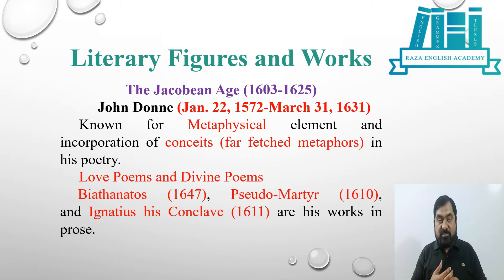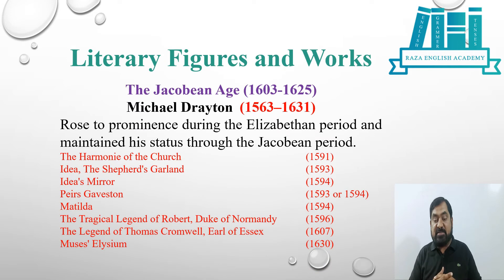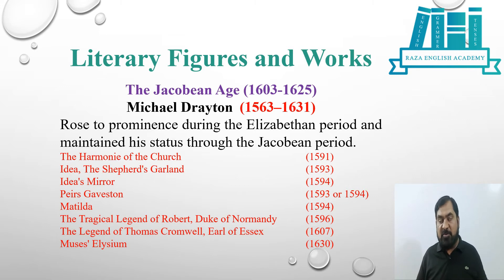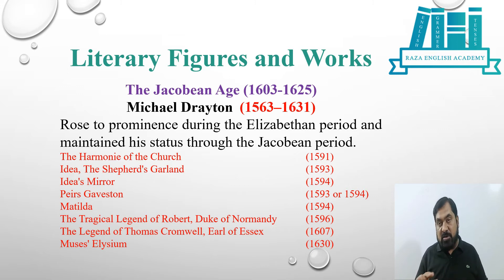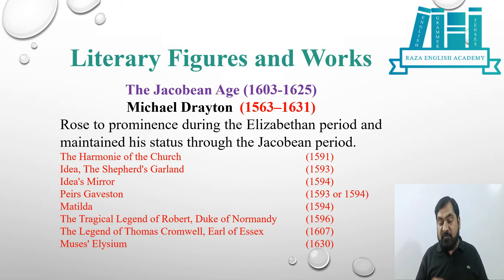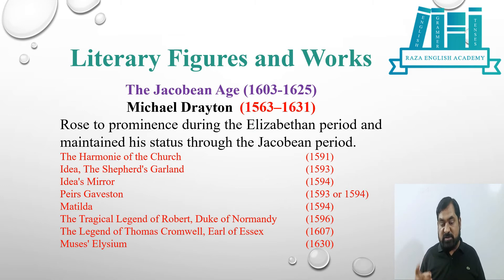Michael Drayton rose to prominence during the Elizabethan period and maintained his status through the Jacobean period. He was born in 1563 and died in 1631. His important works include: The Harmony of the Church (1591), Idea: The Shepherd's Garland (1593), Idea's Mirror (1594), Piers Gaveston (1593), Aure (1594), Mathilda (1594), The Tragical Legend of Robert Duke of Normandy (1596), The Legend of Thomas Cromwell Earl of Essex (1607), and Muses' Elysium (1630).